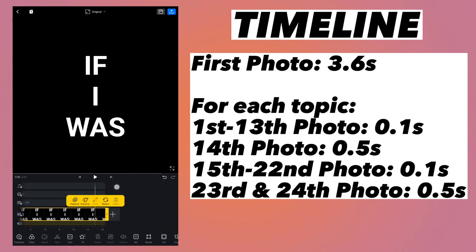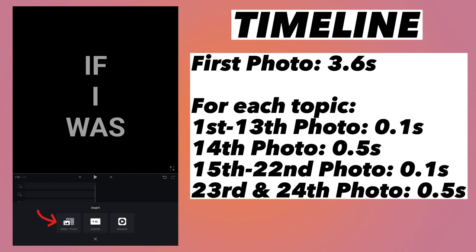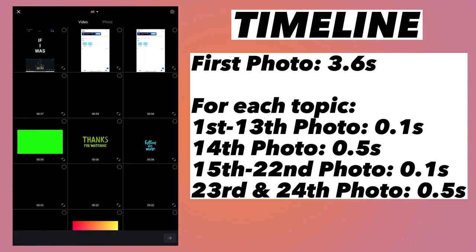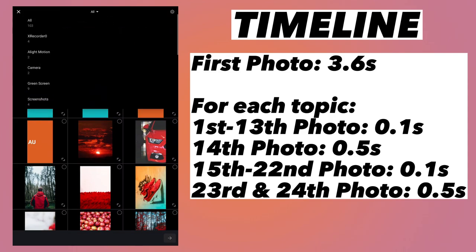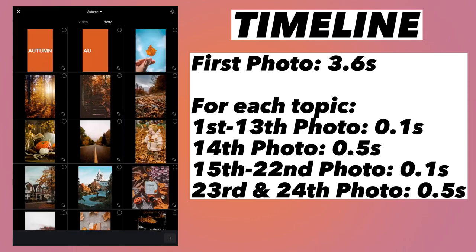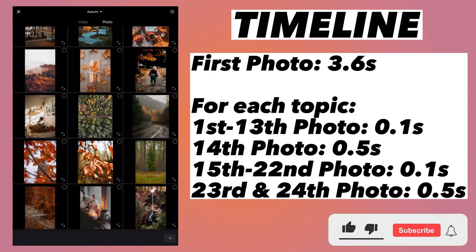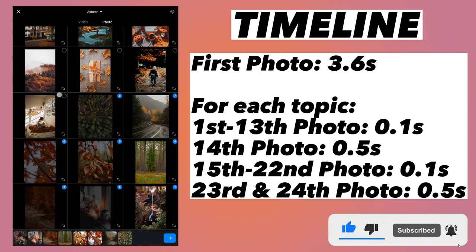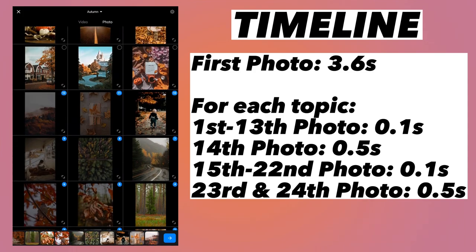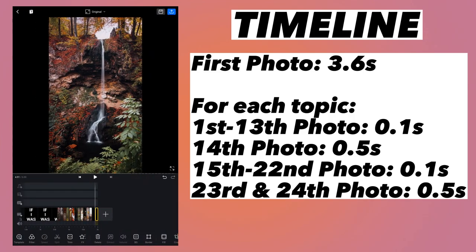Move the playhead to the end, click the plus button, then select the video or photo button and tap on Photo. At the top you can select the folder — I am going to select the autumn folder because that is my first topic. Scroll down and start from the bottom, selecting 14 photos. Click the arrow button at the bottom and those photos will be added to the timeline. Using two fingers you can expand the timeline.